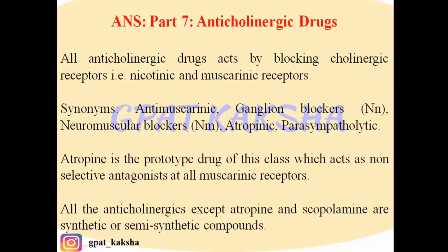In this session of GPAT Kaksha, we will learn about anticholinergic drugs. Anticholinergic means which act against or opposite to the cholinergic system. All anticholinergic drugs act by blocking cholinergic receptors, i.e., nicotinic and muscarinic receptors. There are two types of cholinergic receptors — nicotinic and muscarinic — which further have different subtypes, and all anticholinergic drugs are competitive antagonists of cholinergic receptors.